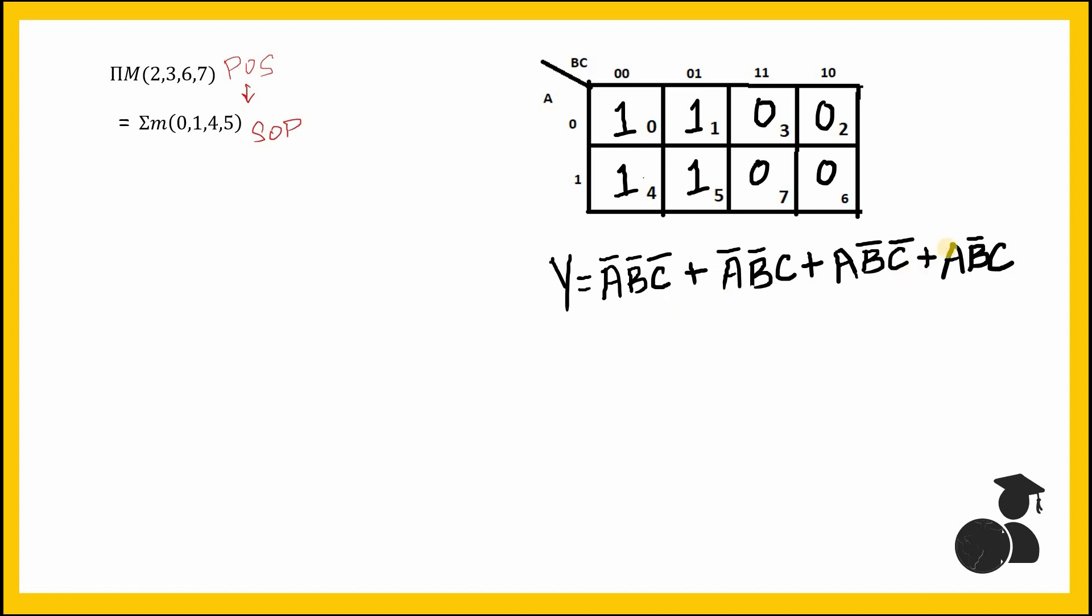Now it is same as the previous problem where we can take a 3-to-8 decoder, give the inputs as our function's inputs. We have all the minterms at the output of the decoder. We only need to take the required minterms 0, 1, 4, and 5 and OR them to get our output.